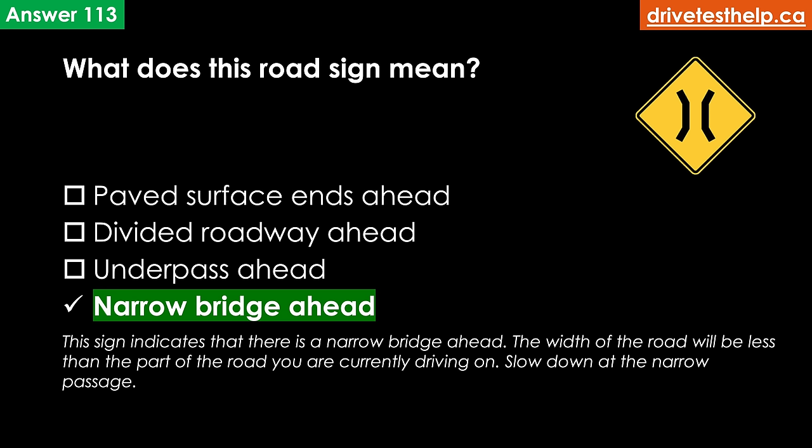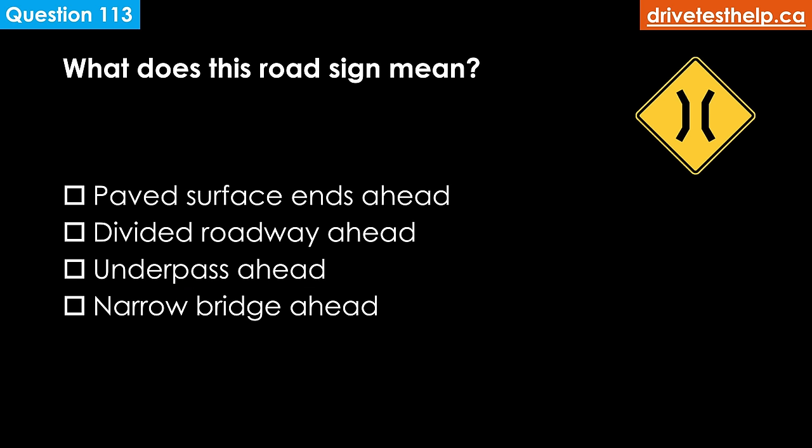What does this road sign mean? Options: paved surface ends ahead; divided roadway ahead; underpass ahead; narrow bridge ahead. The correct answer is narrow bridge ahead. The width of the road will be less than the part of the road you are currently driving on — slow down at the narrow passage.